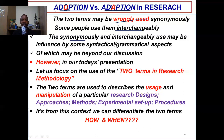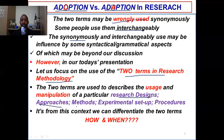This is a short video making emphasis on what we discussed in the last class. So let us focus on the use of these two terms in research methodology. The two terms are used to describe the usage and manipulation of a particular research design, research approach, research method, experimental setups, and procedures conducted while performing a particular research work.